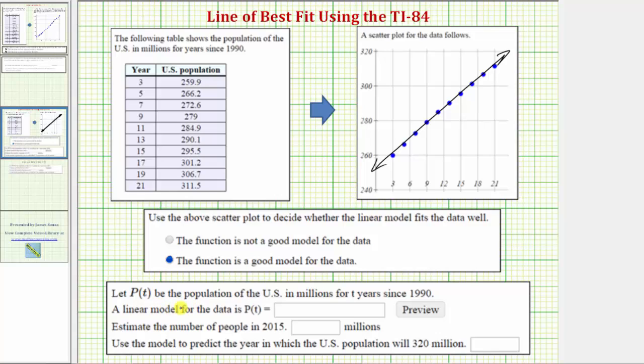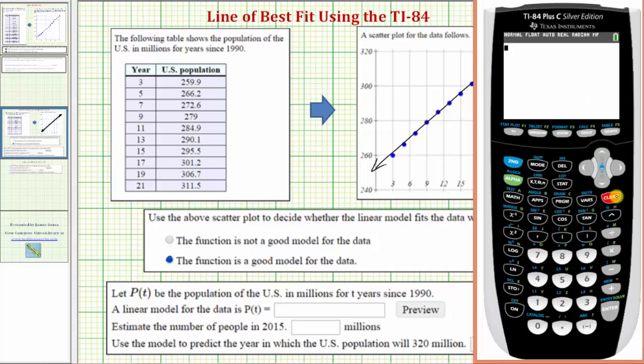Next, we're asked to let P(T) be the population of the U.S. in millions for T years since 1990 and find a linear model for the data. We'll use the linear regression tool on the TI-84 graphing calculator. For the first step, we need to enter the data. Press stat, then enter. If there's any old data in the columns, go to the top of the column, press clear, then enter, and the entire column will clear. Now we'll enter the first column in L1, which is the number of years since 1990.